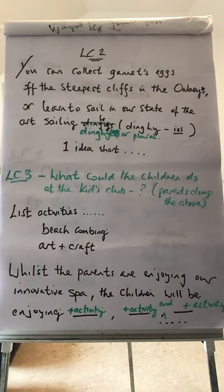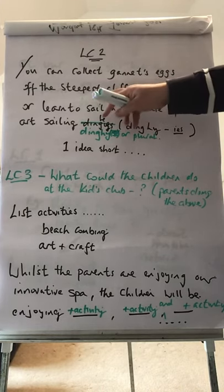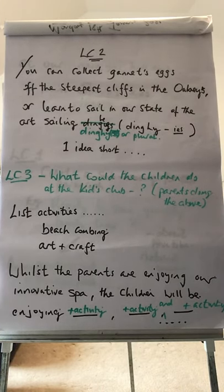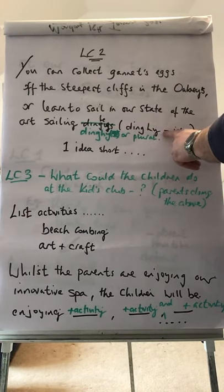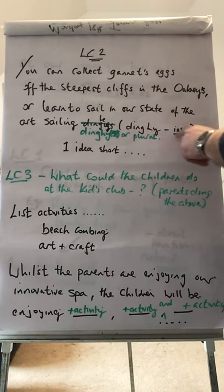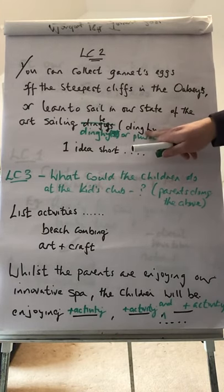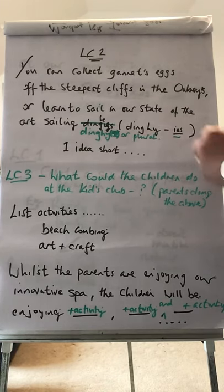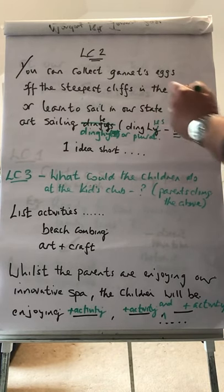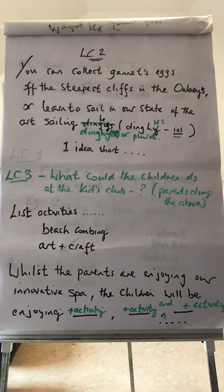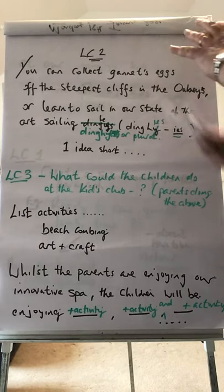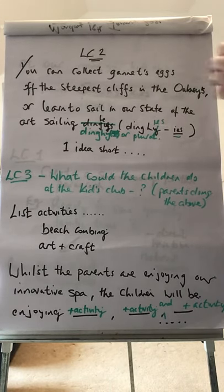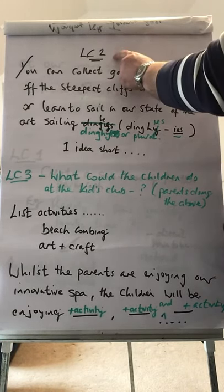Welcome back. So this is my learning chunk two. You can collect Gannet's eggs off the steepest cliffs in the Orkneys and learn to sail in our state-of-the-art sailing dinghies. Remember: dinghy is the singular — if you're writing dinghies, you take off the Y and add I-E-S. The plural form is dinghies. This is one idea I had — I'm actually one idea short. Please don't try and copy mine; I want you to make up your own. This is just to show you how you should structure it once you've done it.